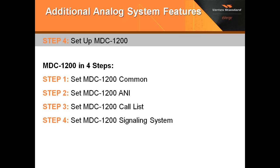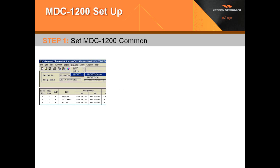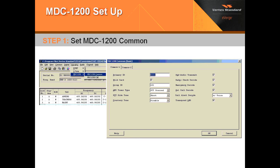Now we're going to go ahead and set up MDC-1200. First, we're going to set MDC-common, then MDC-1200 ANI, then the call list. Lastly, we'll show how to set MDC-unit signaling system. Keep in mind that you cannot use ANI and signaling system together, because signaling system has its own ANI embedded in it. We're going to first go in and set up our MDC-common by clicking on Signaling > MDC-1200 > MDC-1200 Common, as you see highlighted, and that will bring up this window.